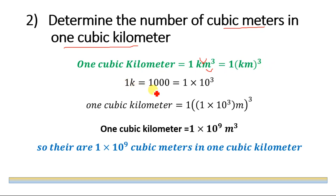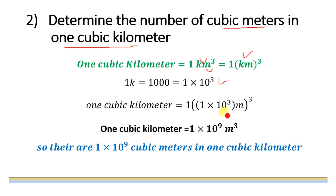We know that 1 kilo is equal to 1000, which is 1 × 10³ in scientific notation. Substituting the value of kilo, we have 1 cubic kilometer = (1 × 10³ m)³. This gives 1 × 10⁹ m³, since 3 multiplied by the cube power gives 10 power 9. So there are 1 × 10⁹ cubic meters in 1 cubic kilometer.